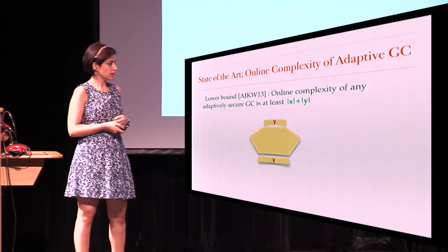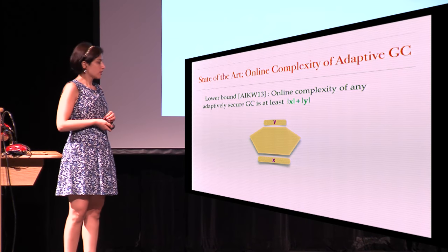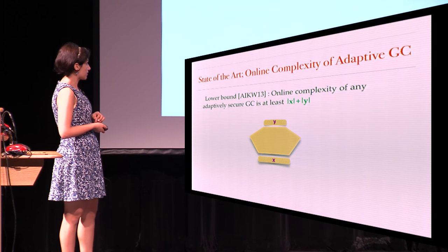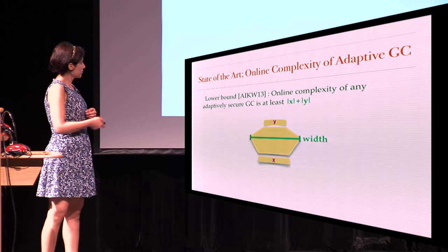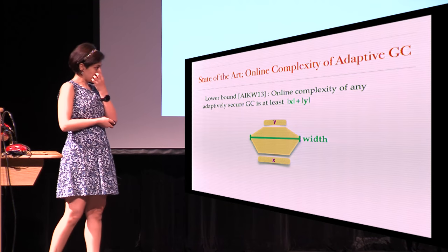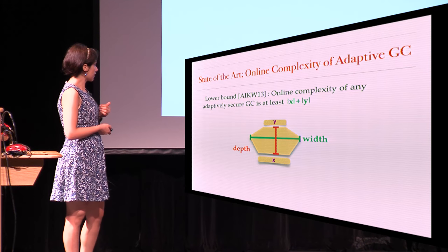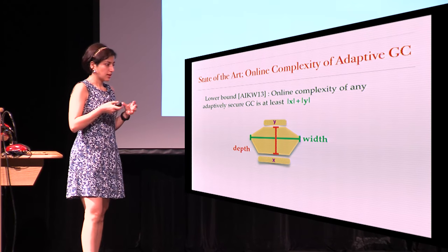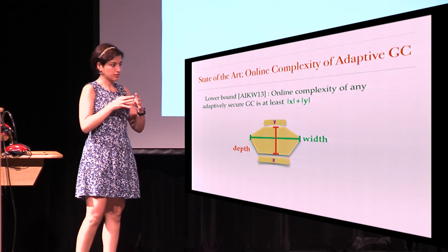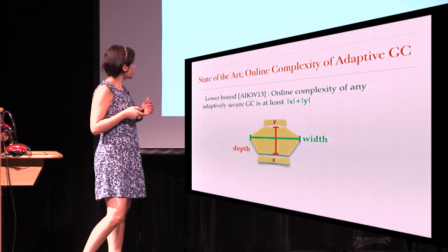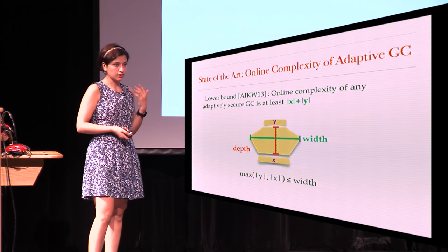What do we know about the online complexity of an adaptively secure garbling scheme? We know it has to be at least the size of the input plus the size of the output. The two other parameters we can consider are the width of the circuit, which is proportional to the space complexity of the computation, and the depth of the circuit. We don't assume anything about the circuit — it can be a very long circuit with a very small width, or a very wide circuit with a very small depth. The only thing we know is that the width has to be at least the size of the input.